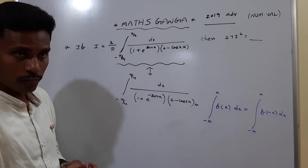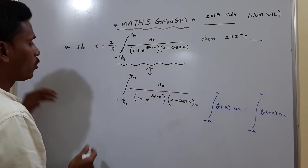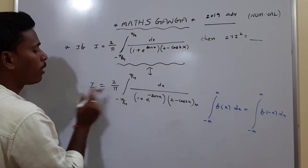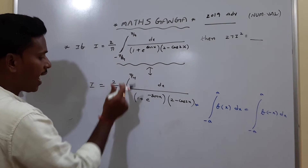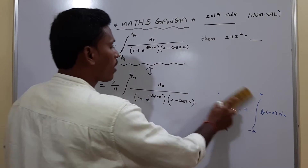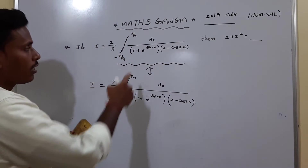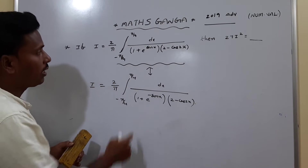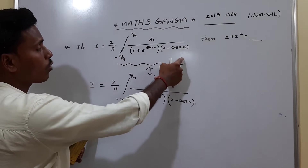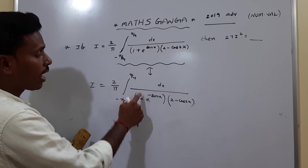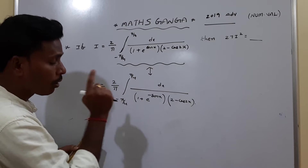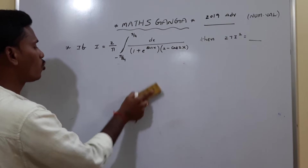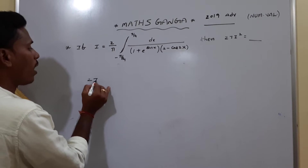Since these two integrals are equal, we add them. We have I equal to both expressions, so adding I plus I gives 2I. The factor 2 by π is common, and (2 minus cos 2x) is common. Inside, we have 1 by (1 + e^(sin x)) plus 1 by (1 + e^(minus sin x)).